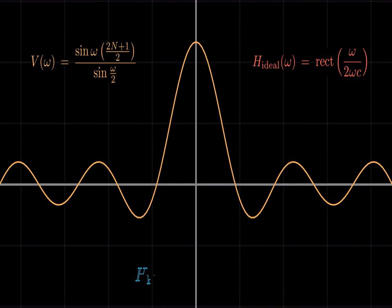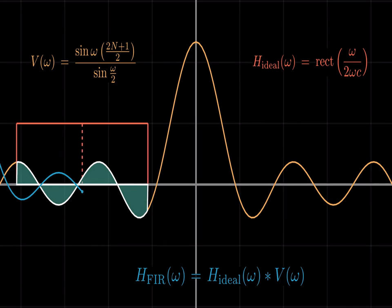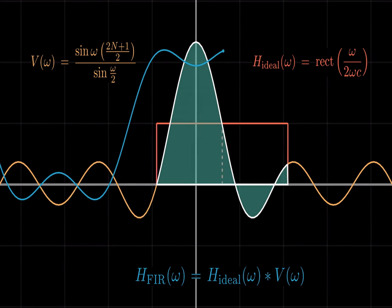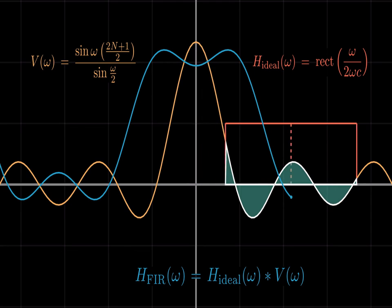When omega comes in between minus omega c to plus omega c, where omega c is the cutoff of the low pass filter, then the major lobe will be contributing which again diminishes when omega becomes greater than omega c.